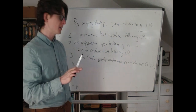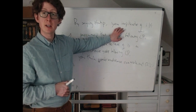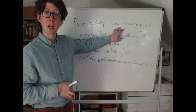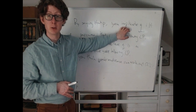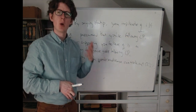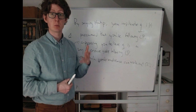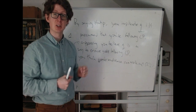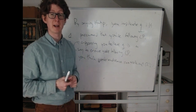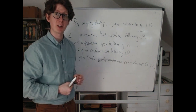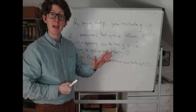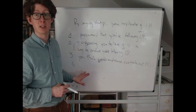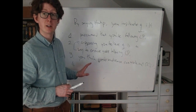The fourth condition Grice gives is that when you implicate Q, you've done nothing to suggest to your audience that you don't want them to conclude Q — you've done nothing that would make your meaning Q implausible. If you think back to the cancelability test, we saw that when you explicitly deny that you're saying something, that tends to make the implicature go away. Explicitly saying 'I don't want you to infer that I mean Q' is a very good way to ensure that you don't implicate Q. So this fourth condition requires that you've done nothing to prevent the audience from concluding Q.